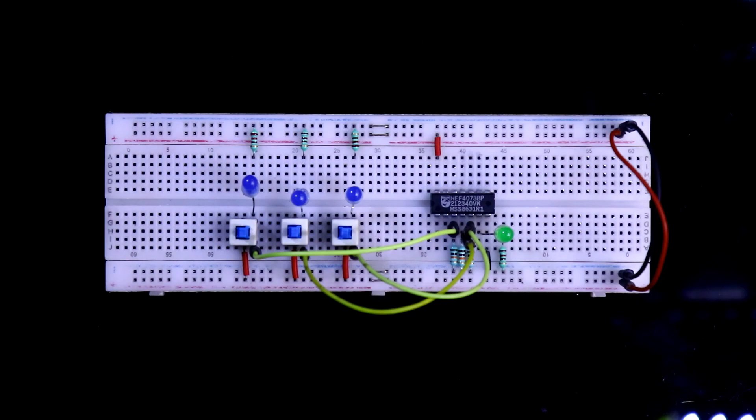Now I'm connecting the positive rail and the negative rail. Connection is completed. Now connecting the power supply—here is negative and positive.